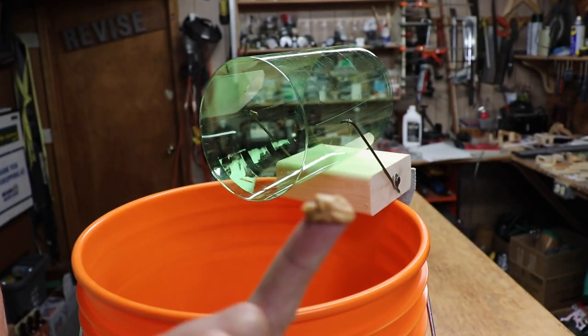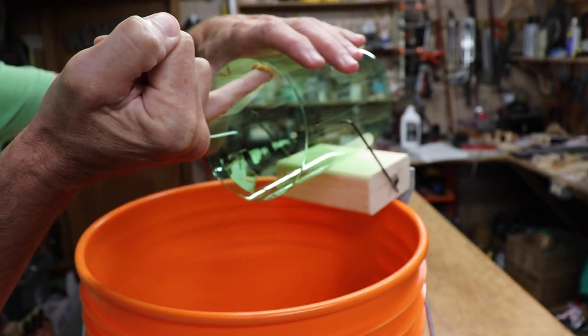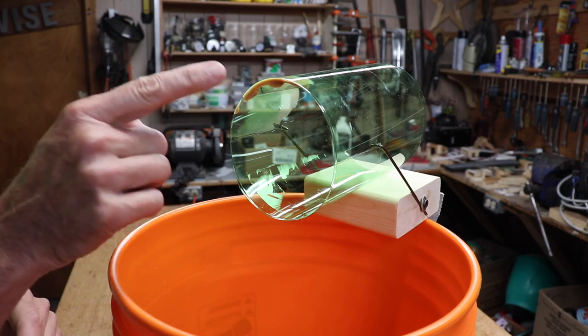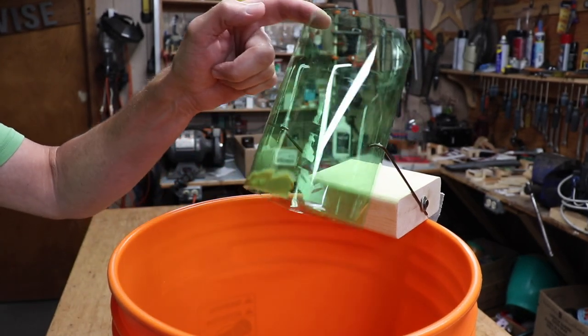And then get about that much peanut butter and smear it on the inside on the top and that's all you need. And if you put too much peanut butter here you'll know right away because the trap won't reset.